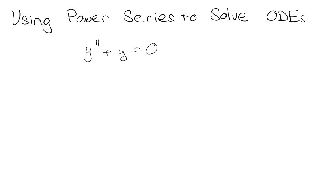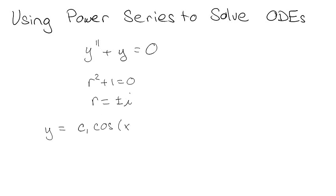Here we're going to look at how to use power series to solve some ordinary differential equations. You might be like, but I already know how to solve this, because you write the characteristic equation, so r squared plus 1, which means r is equal to plus or minus i, which means the solution is c1 cosine x plus c2 sine x. Done! End of video.